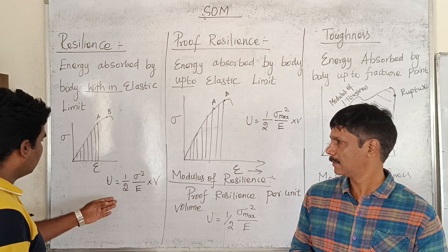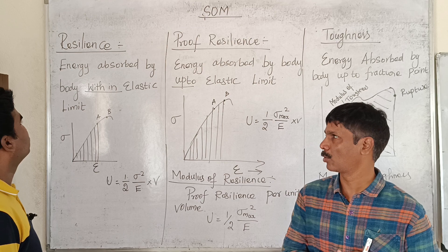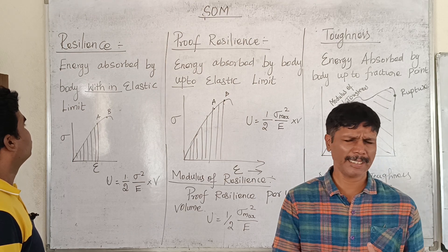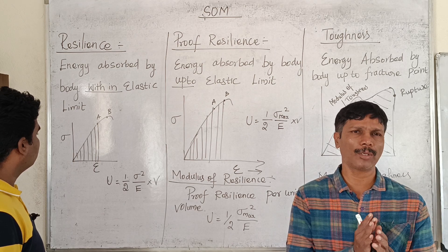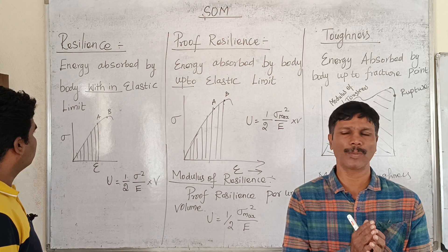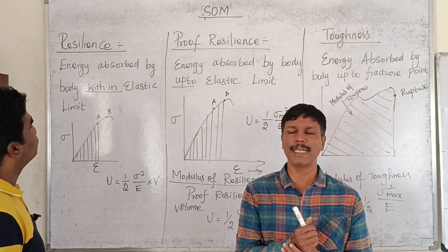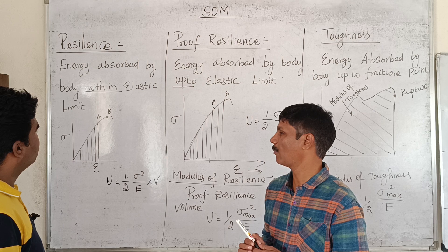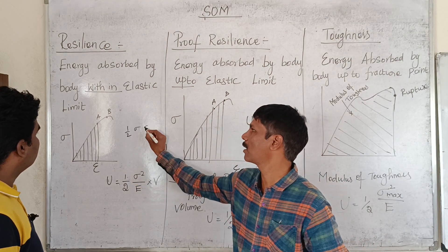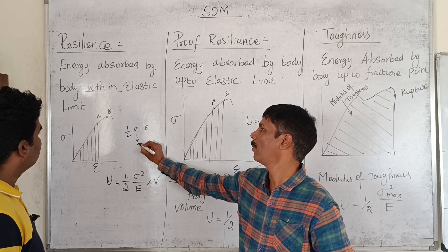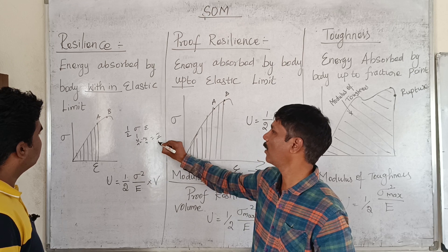The formula for resilience is half sigma squared divided by E, into volume. What is the stress-strain integral? The area of the stress-strain curve going up to the elastic limit gives resilience. Resilience equals half sigma into E. The unit is joule per meter cube — energy absorbed per unit volume.